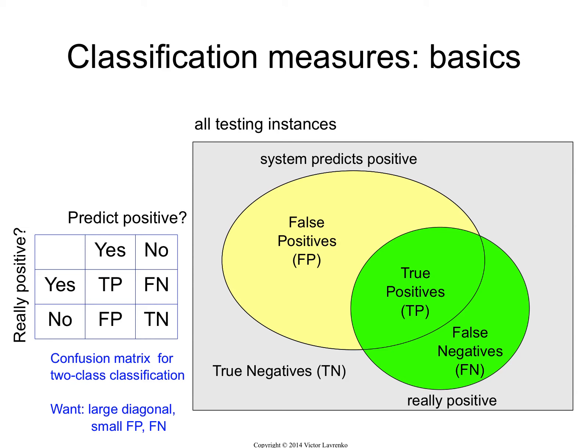You can show it as a Venn diagram, or you could also draw it as a confusion matrix, which is something you get in the Weka output. For two classes, it would have two rows and two columns. The rows correspond to the truth, so everything in the first row is really spam positive and the second row is really negative, non-spam. The columns correspond to our system prediction, and you have those four subsets in the confusion matrix.